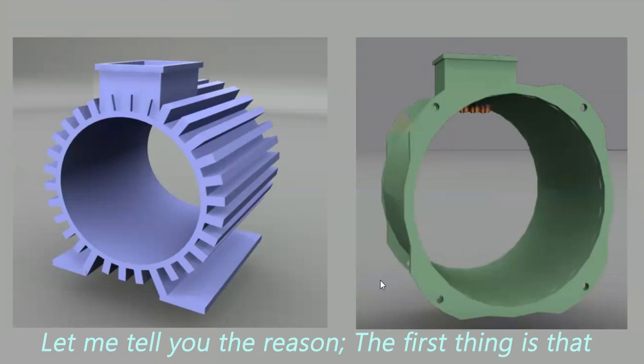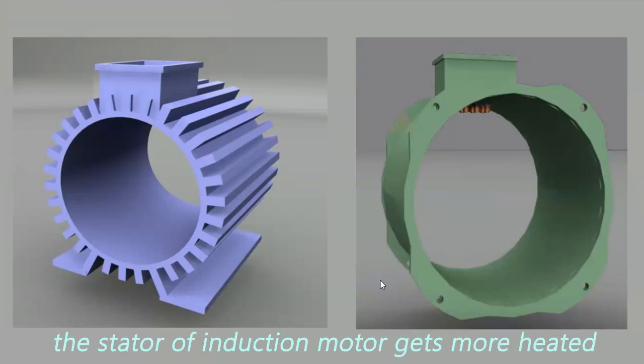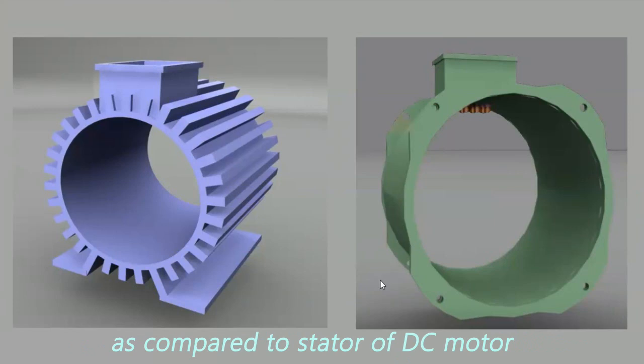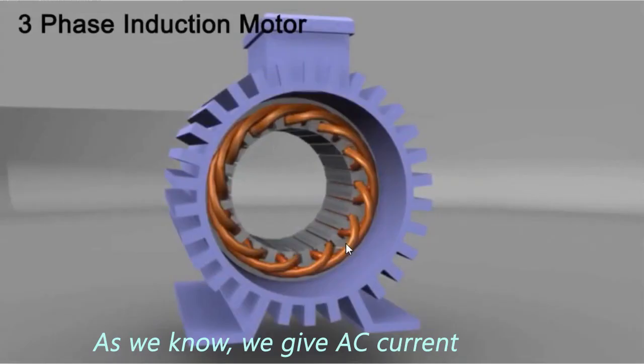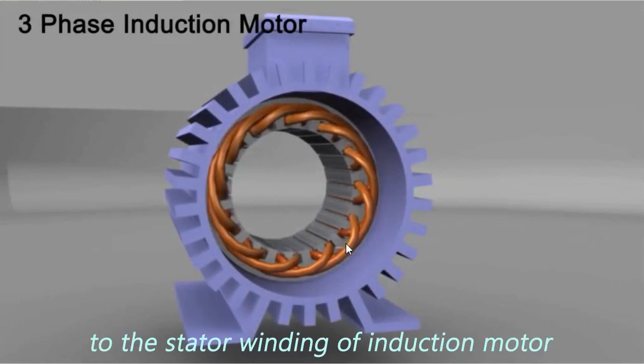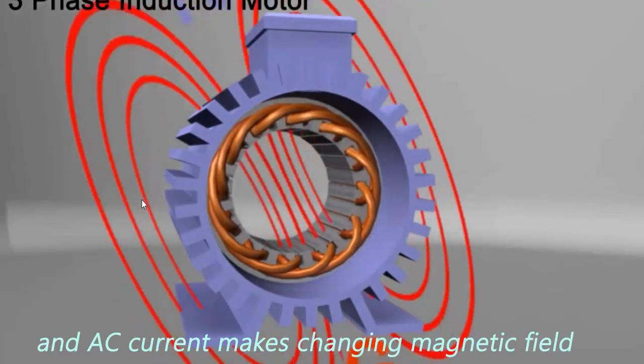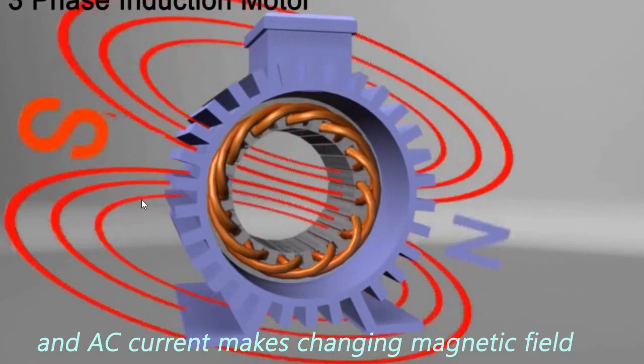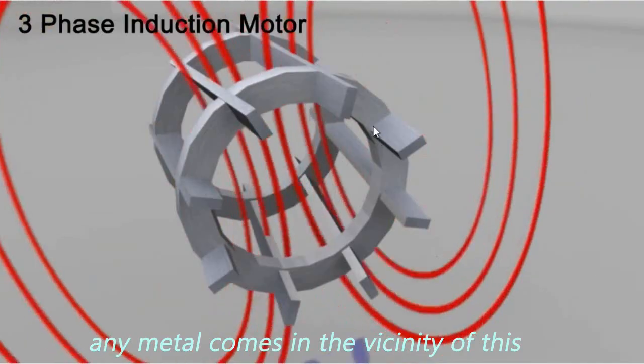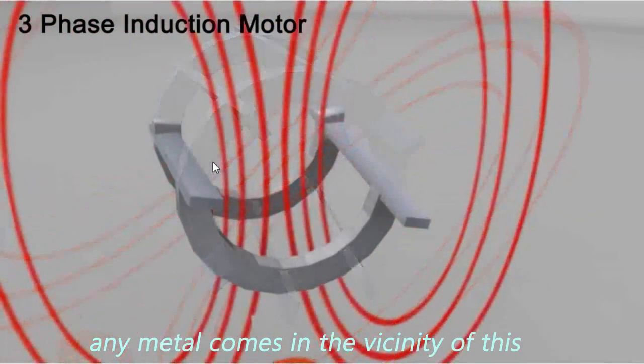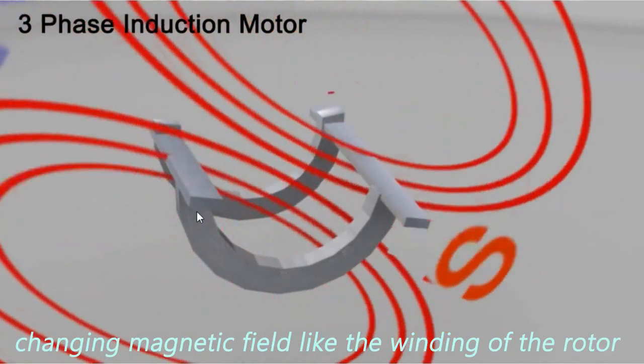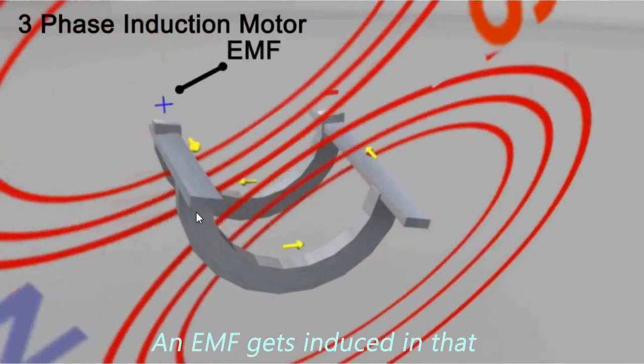The first thing is that the stator of induction motor gets more heated as compared to stator of DC motor. As we know, we give AC current to the stator winding of induction motor, whether it is a single phase or three phase. And AC current makes changing magnetic field. Any metal comes in the vicinity of this changing magnetic field like the winding of the rotor and EMF get induced in that.